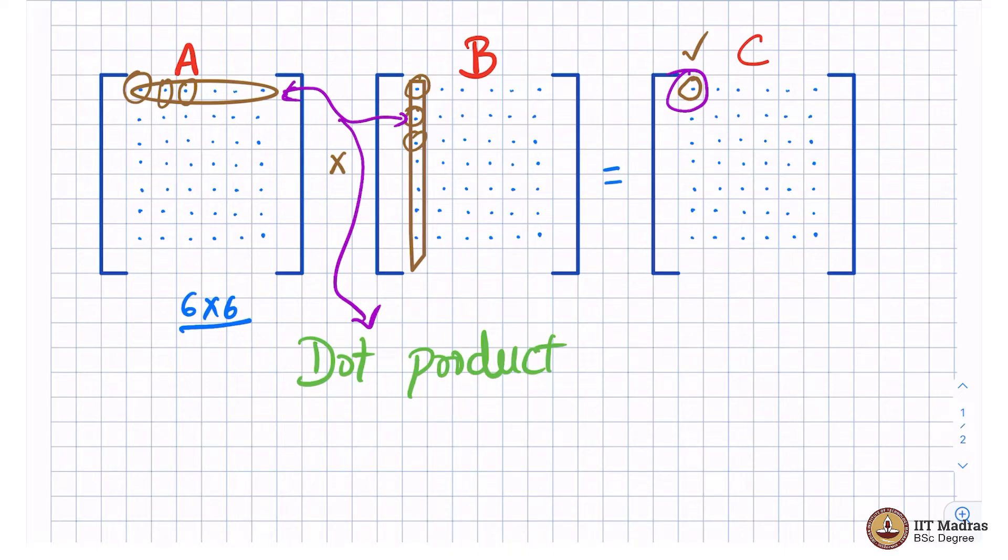So, in general, if I say some entry of C, which is basically fourth row and third column, for simplicity sake, let me assume the first row as 0th row, second row as the first row, 0, 1, 2, that is how we do in Python. This is the 0th row, first row, second row, third row, fourth row, fifth row and sixth row. And the columns are, this is the 0th column, first column, second column, third column, fourth column and fifth column. So, this particular entry then becomes the C of 3 comma 2.